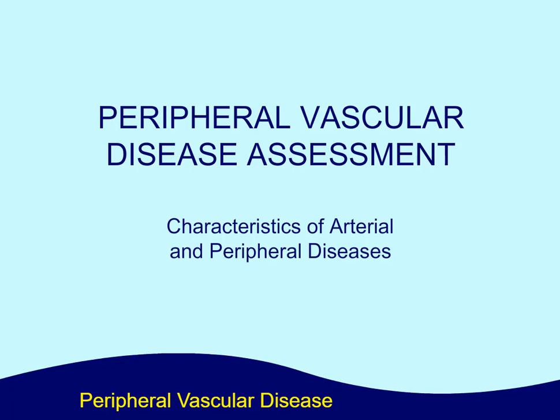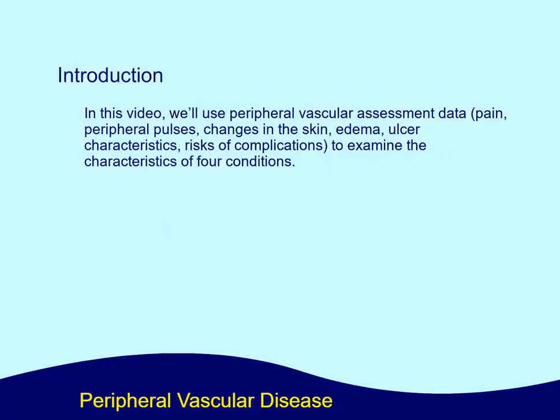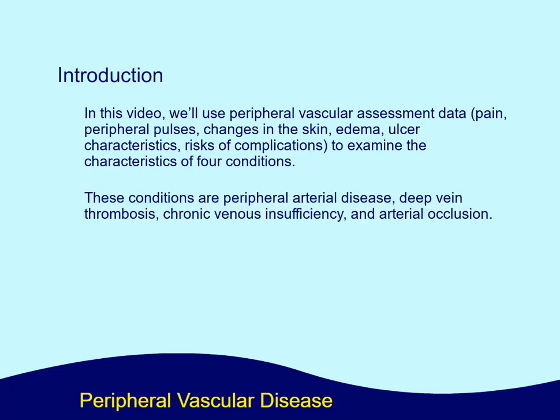Welcome to the video, Peripheral Vascular Disease Assessment. In this video, we'll use peripheral vascular assessment data — pain, peripheral pulses, changes in the skin, edema, ulcer characteristics, and risks of complications — to examine the characteristics of four conditions: peripheral arterial disease, deep vein thrombosis, chronic venous insufficiency, and arterial occlusion.